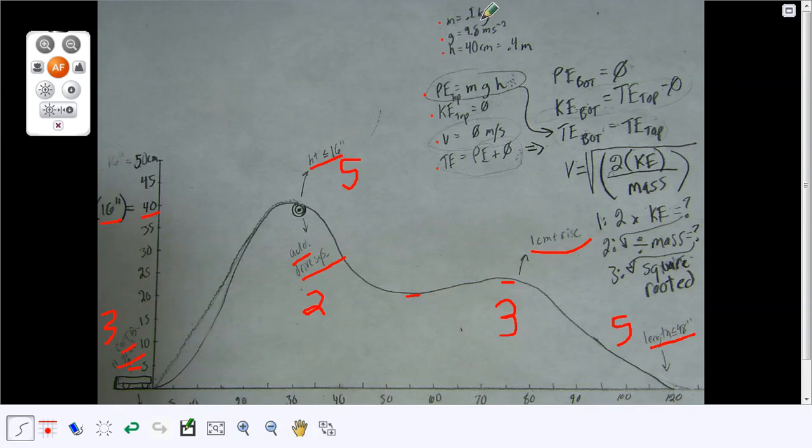So 0.1 kilograms is multiplied by 9.8, the acceleration due to gravity, multiplied by however many meters you have. If you're 16 inches tall, 40 centimeters, that's 0.4 meters times 9.8 times 0.1, which gives you the potential energy.